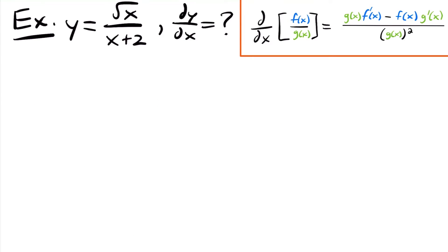Let's look at another example. We have y equals the square root of x divided by x plus 2, and we want to know dy/dx. Here is our quotient rule for reference. Let's identify our two functions: our f of x is the square root of x, and the denominator g of x is x plus 2. So those are our two functions — the square root of x and x plus 2.